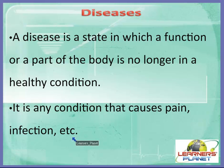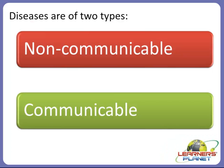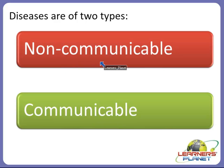There are mainly two types of diseases. They are majorly categorized into two types: non-communicable diseases and communicable diseases. We will now study about each of them in detail.